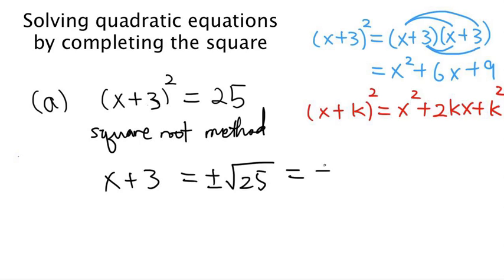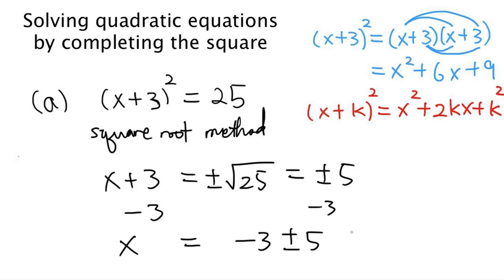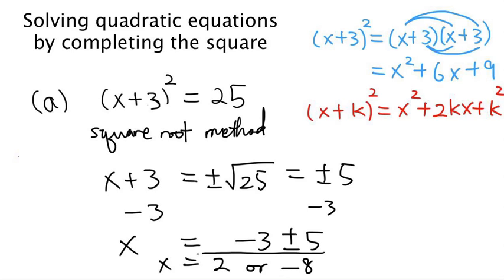So x plus 3 equals plus or minus square root of 25, which is plus or minus 5. Subtract 3 from both sides and we have x equals negative 3 plus or minus 5. If the sign is plus, we get negative 3 plus 5, which is 2. If the sign is negative, we get negative 3 minus 5, which is negative 8. So we have these two solutions.